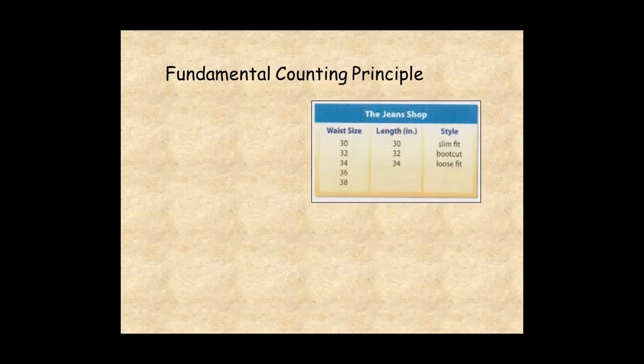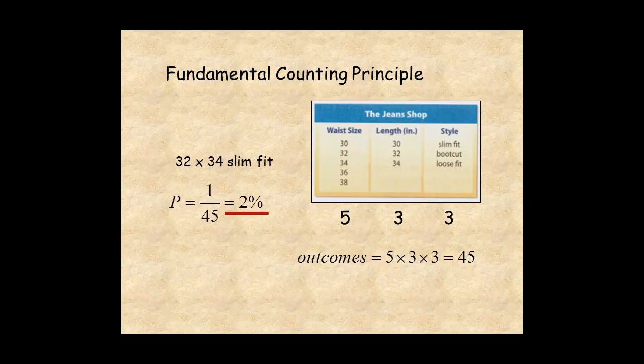This table shows the different waist sizes, leg length, and style in the jeans shop. There are five waist sizes, three leg lengths, and three styles. Using the fundamental counting principle, there are five times three times three equals 45 different combinations. The probability that a 32 by 34 slim fit is selected randomly is one chance in 45, or about 2%. Not very likely.